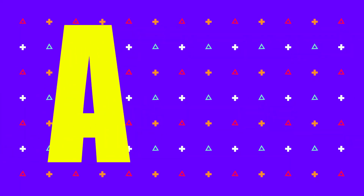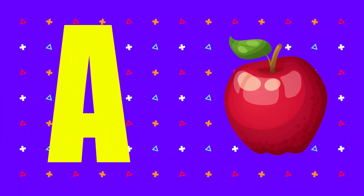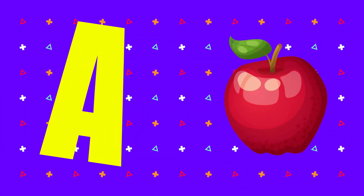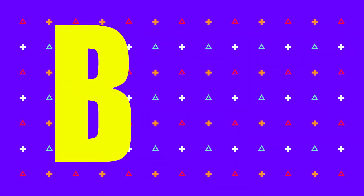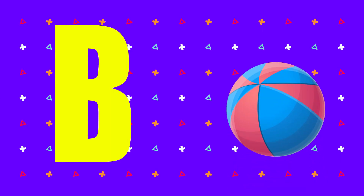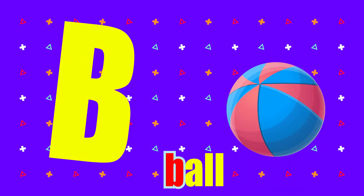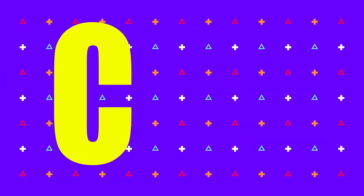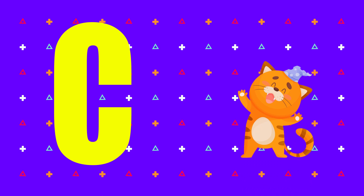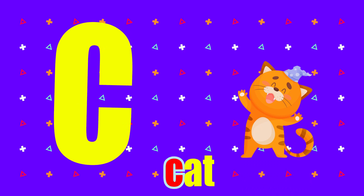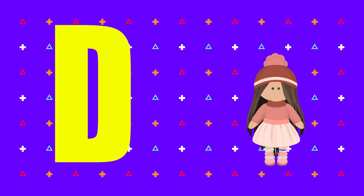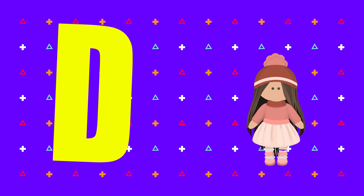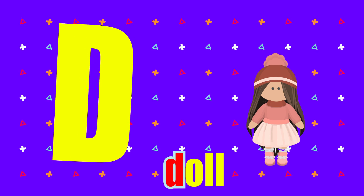A is for apple, a-a-apple. B is for ball, b-b-ball. C is for cat, c-c-cat. D is for doll, d-d-doll.